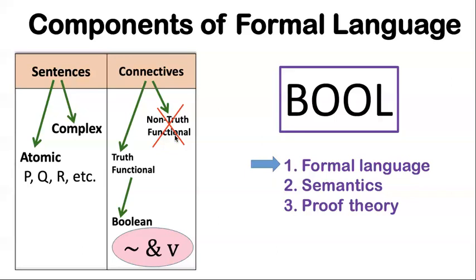But any formal system that we build in this class, like Bool, will have only truth functional connectives. So I mention this here because it's a part of English, but it's not a part of Bool. All the connectives in Bool are going to be truth functional. And not all truth functional connectives are Boolean. But the ones in Bool are all Boolean. So Bool is just going to have those three connectives in its language. Now, what does truth functional mean? We'll talk about that in a subsequent video.